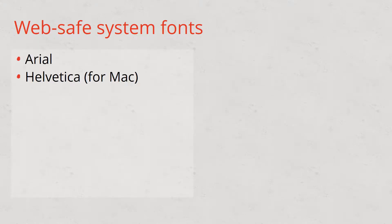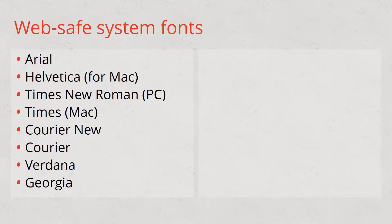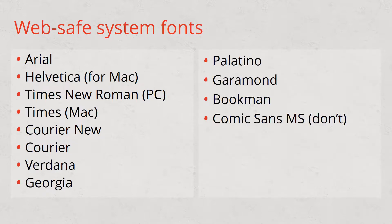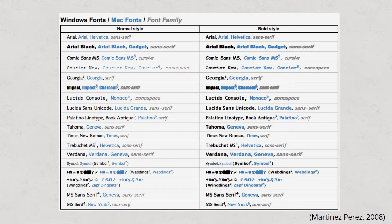You have Arial, Helvetica if you're on a Mac, Times New Roman or Times, Courier New, Courier, Verdana, Georgia, Palatino, Garamond, Bookman, Comic Sans, Trebuchet, Arial Black, and Impact. So it looks like a long list, but if you have a look at those fonts it doesn't give you a whole lot of stylistic choices — and in fact a lot of them you would just rule out altogether because they are plain ugly. So what does that leave a designer to do?